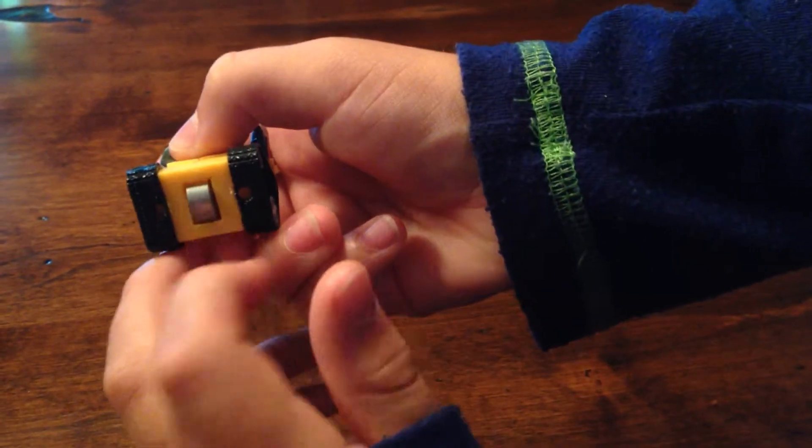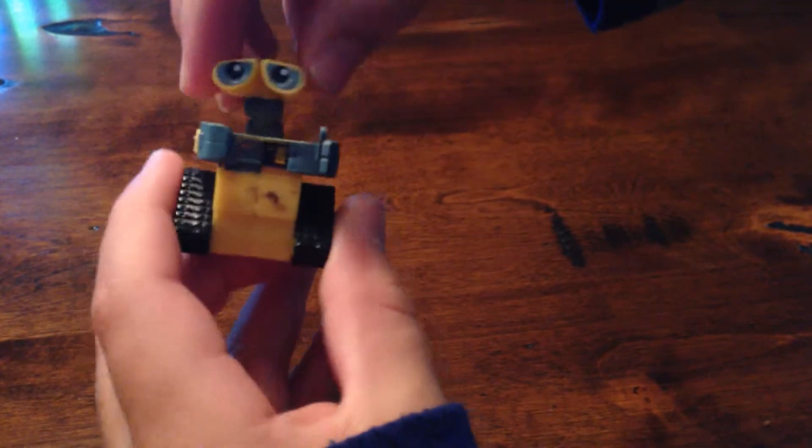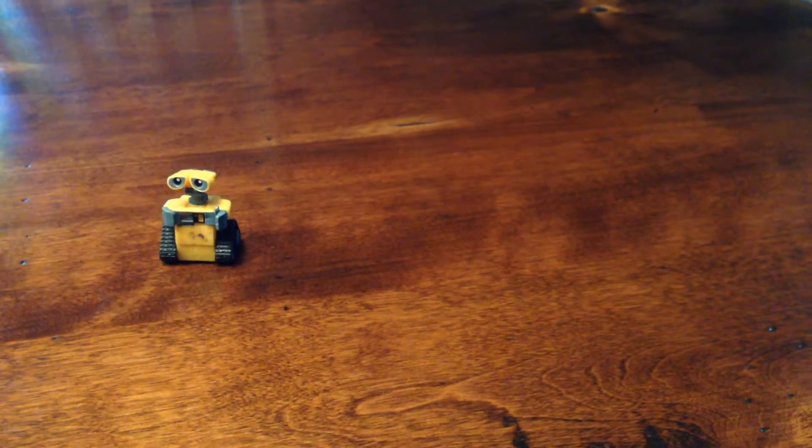Like that. And to make him move like a car, there's a wheel. And his head can move side to side. So that's the smallest WALL-E.